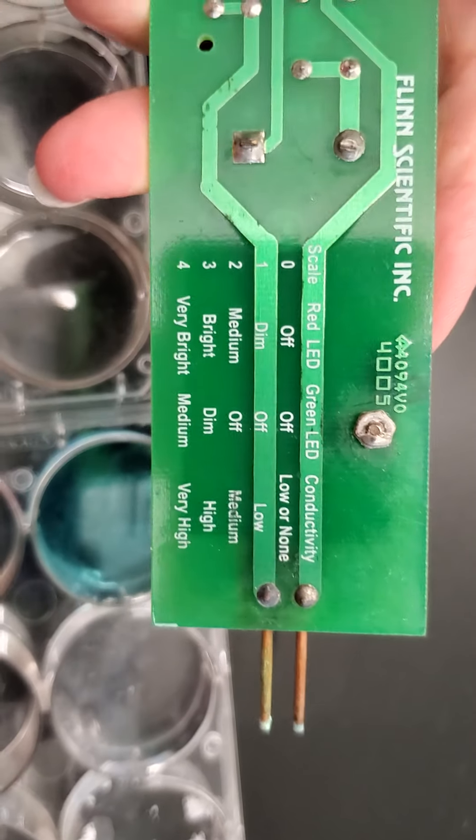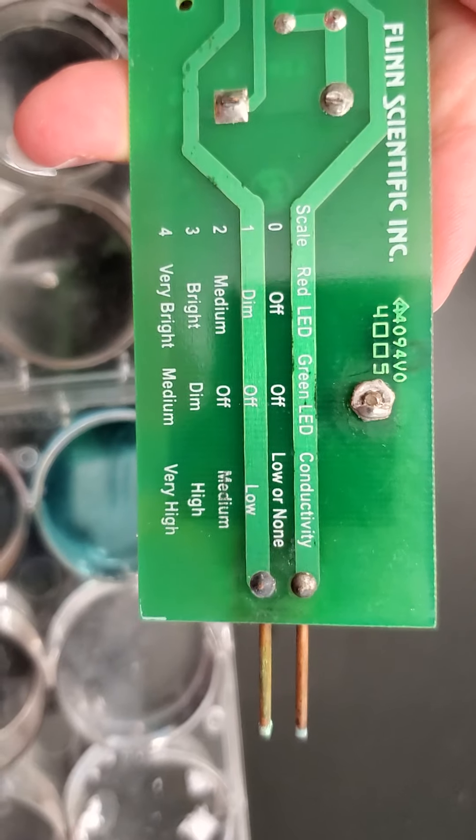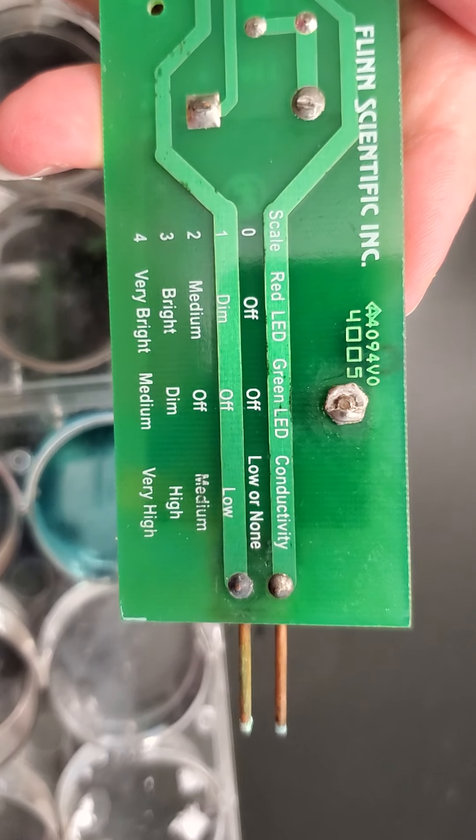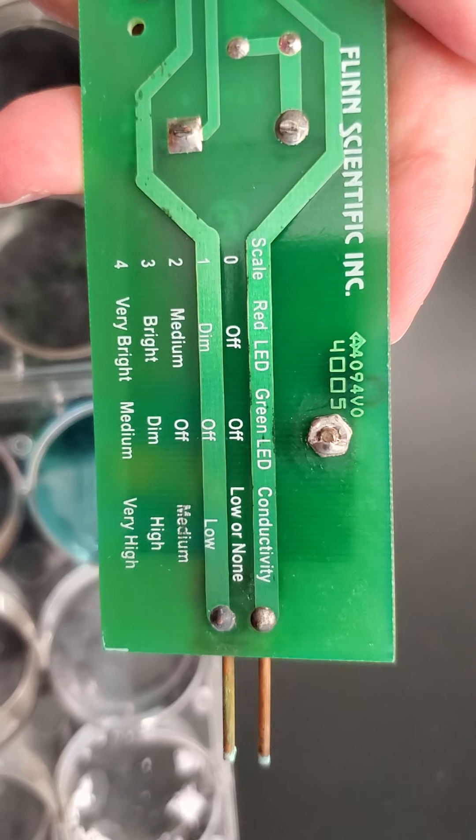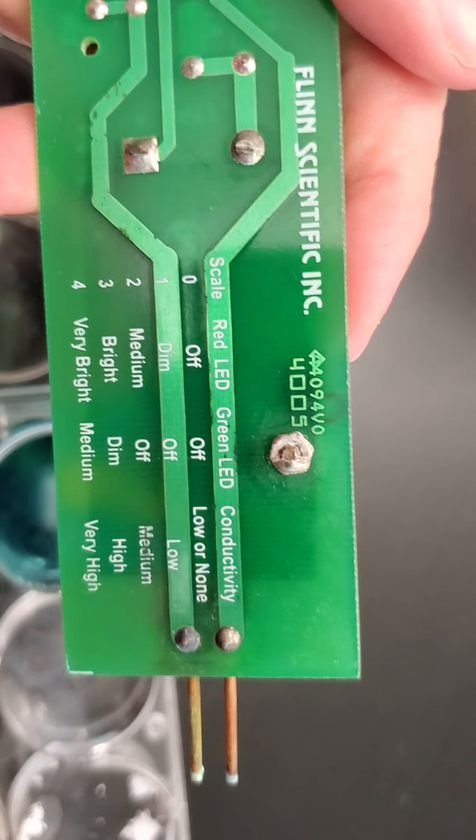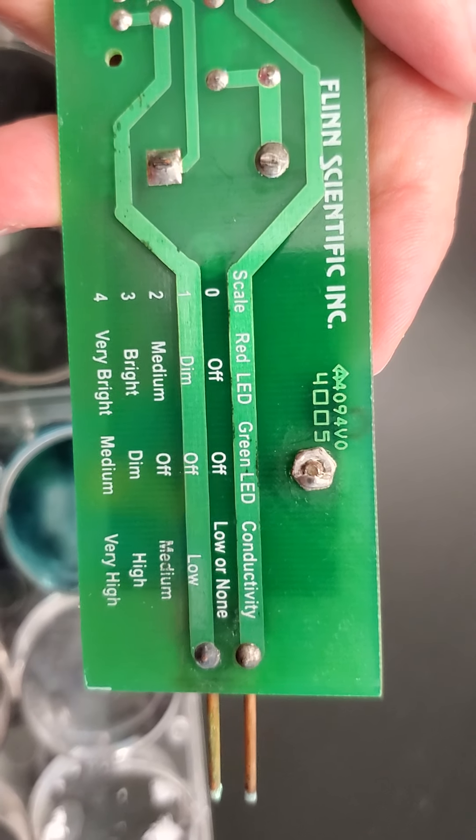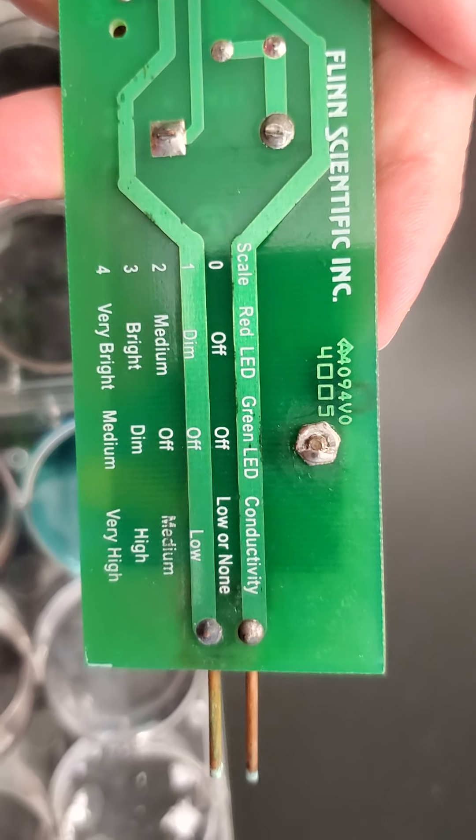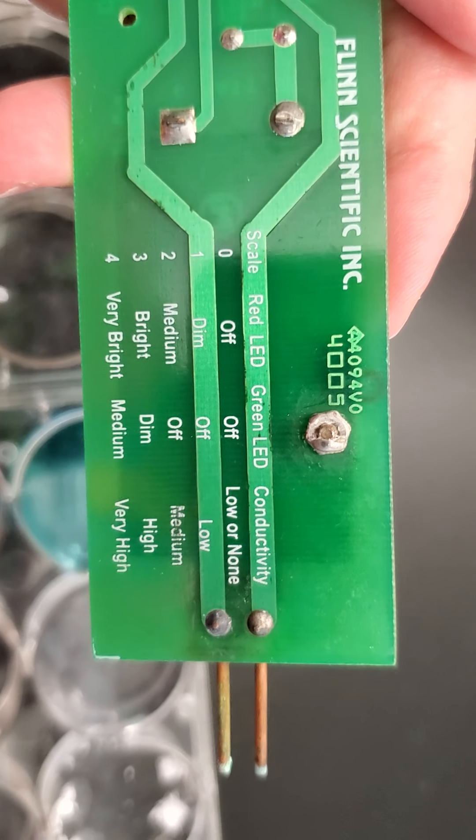It has a little guide at the back. If either light doesn't turn on, it's low or no conductivity. If it's dim on the red and the green stays off, then it's low. If the red looks medium and the green is still off, it's medium conductivity.